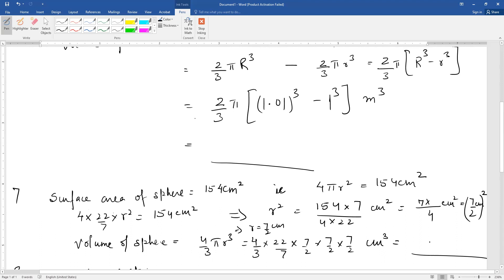Question number 8 is, a dome of a building is in the form of a hemisphere. From inside it was whitewashed.